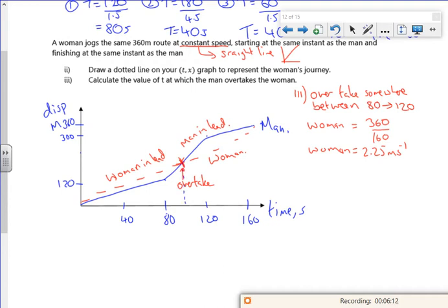So this will be a time t, and this will be a displacement. When it overtakes, because that's a straight line, I think for the woman she's got an equation for displacement, which is 2.25. It's just a straight line. Let's think about this now. If we're overtaking somewhere between 80 and 120, that's when the speed was 4.5 for the man.